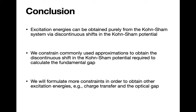Moving forward, we will construct constraints capable of capturing these discontinuous shifts in the Kunsham potential that correspond to uncharged excitation. In conclusion, in principle, the Kunsham system of non-interacting electrons can yield exact many-body excitation energies through discontinuous constant shifts in the Kunsham potential that occur when the Kunsham system is excited, for example upon charge transfer or the addition of an electron. We constrain the commonly used local density approximation in order to capture this discontinuous behaviour. Future work will focus on the development of these constraints so that reliable excitation energies such as the fundamental gap, charge transfer energy, and the optical gap can be obtained directly from a single Kunsham calculation.